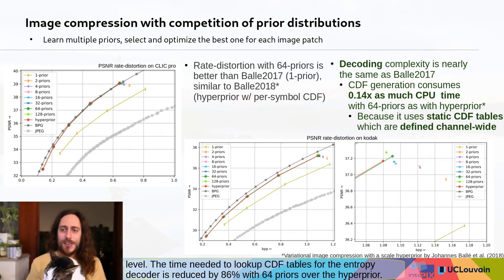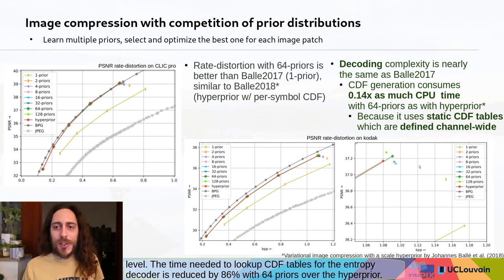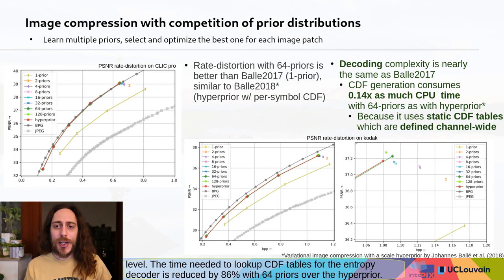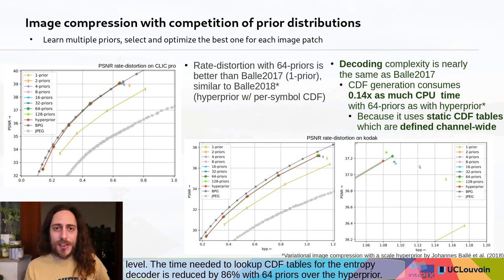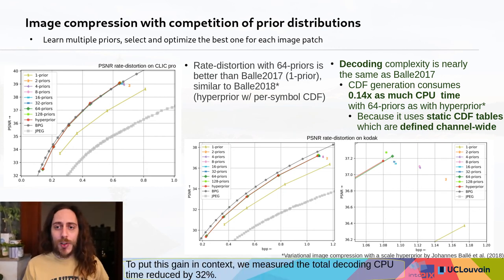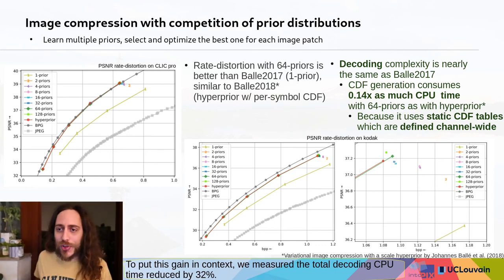The time needed to look up CDF tables for the entropy decoder is reduced by 86% with 64 priors over the hyperprior. To put this gain in context, we measured the total decoding CPU time to be reduced by 32%.